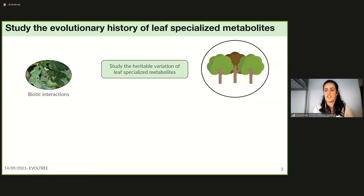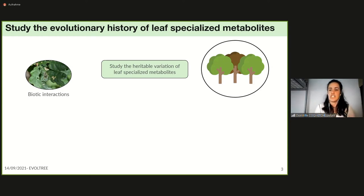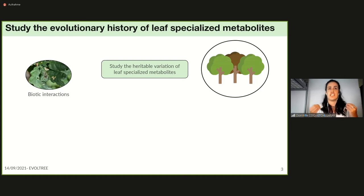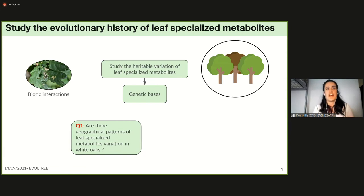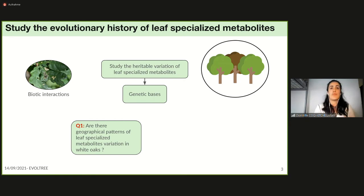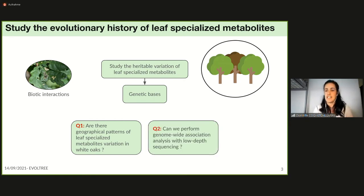In our project we study the adaptive value and the evolutionary history of leaf specialized metabolites. First we need to study the heritable variation of leaf specialized metabolites and identify the underlying genetic basis. In this talk I will answer two questions: first, are there geographical patterns of leaf specialized metabolite variation in white oaks, and second, can we perform genome-wide association analysis with low-depth sequencing?